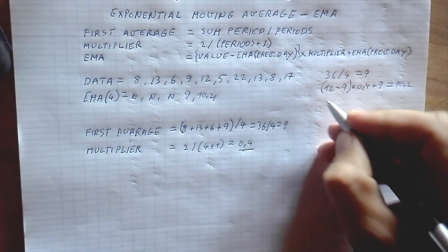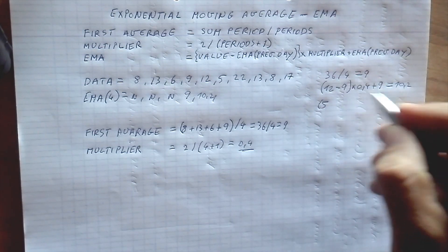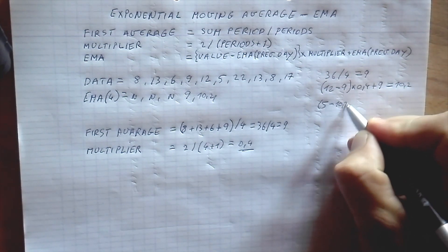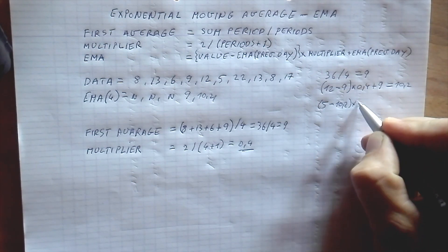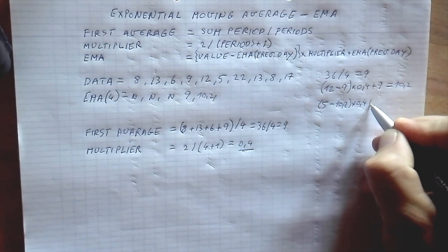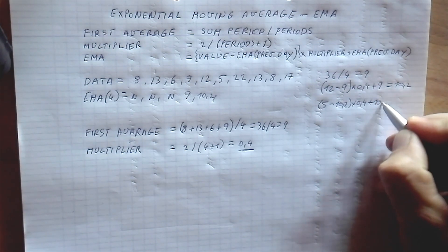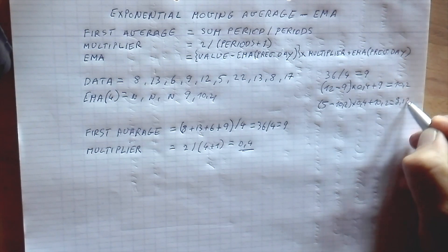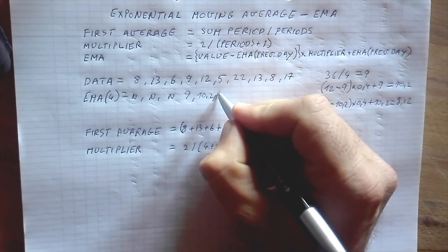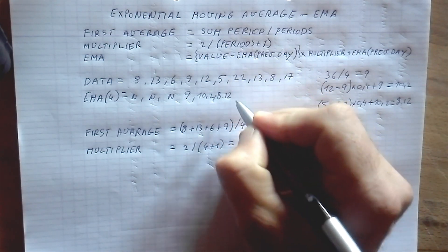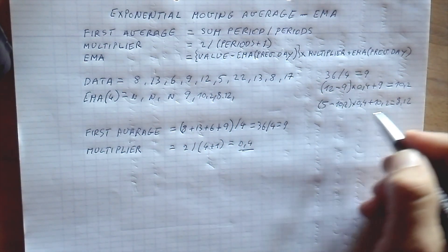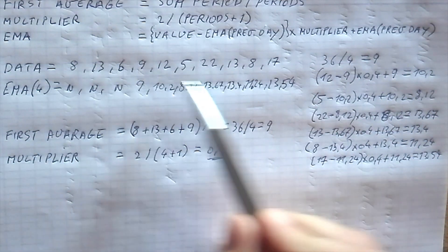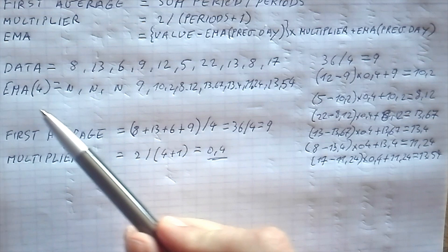So 10.2 goes here. Next one, same thing: we take 5 — our current value — minus the previous EMA 10.2, times our multiplier 0.4, plus the previous EMA 10.2 again. That gives us 8.12, and that goes here. We continue this for all the next values.